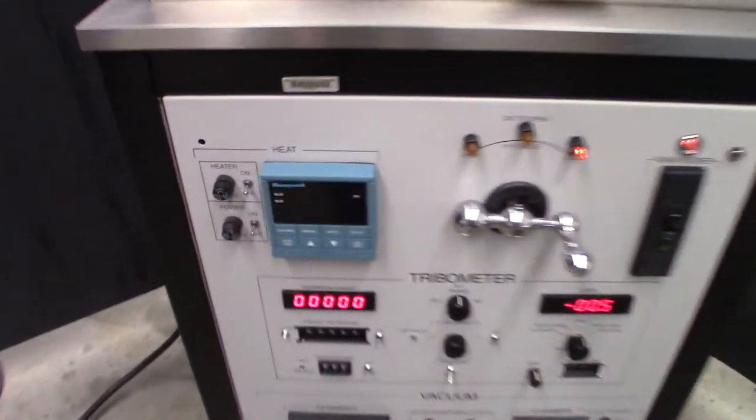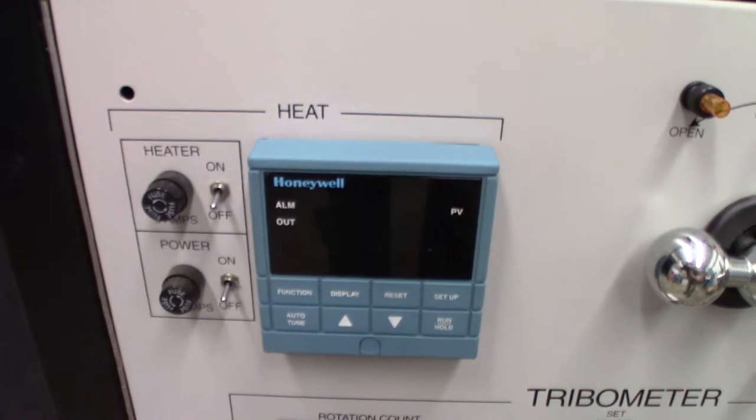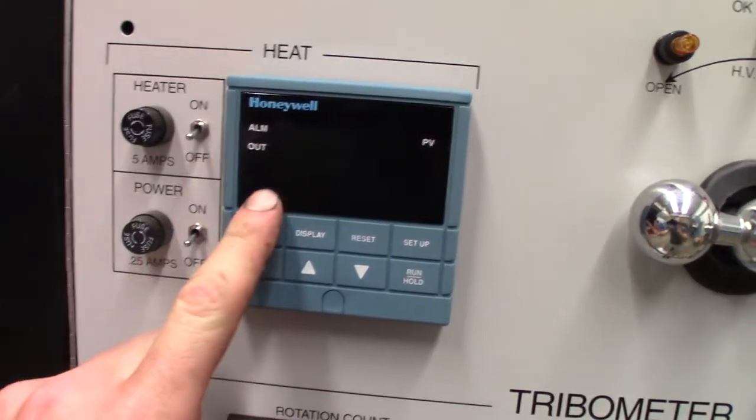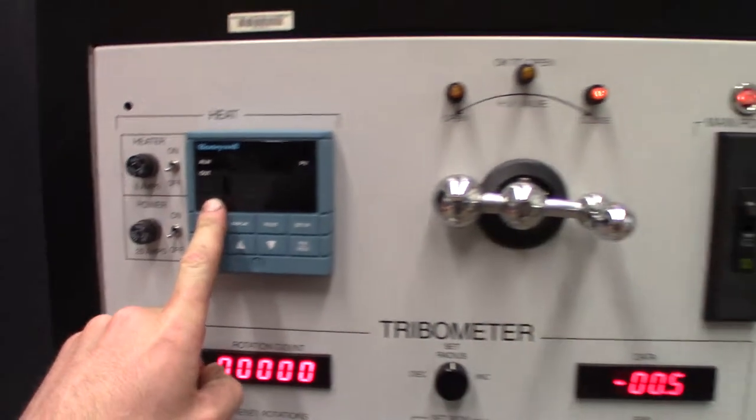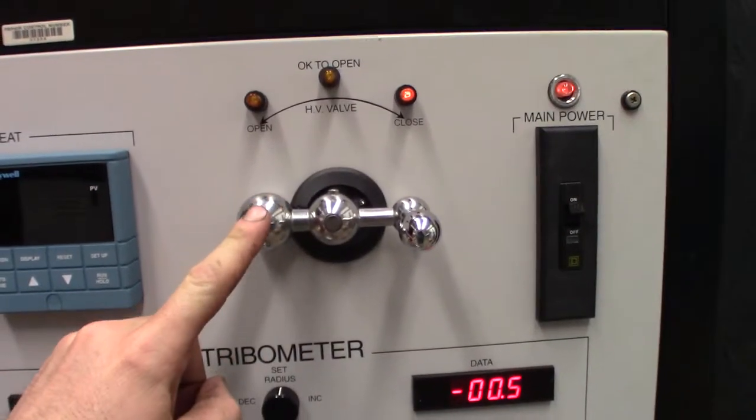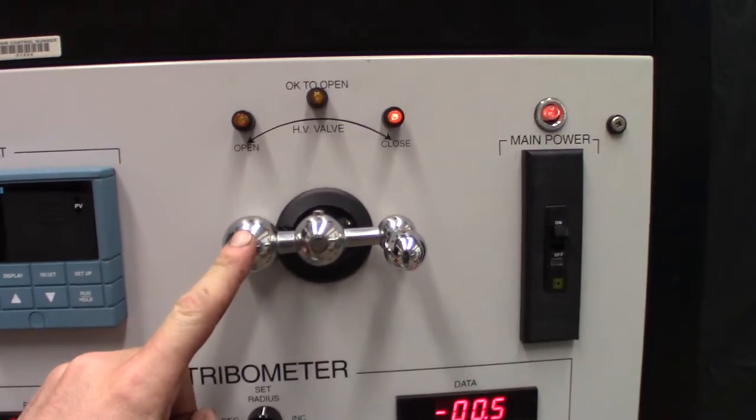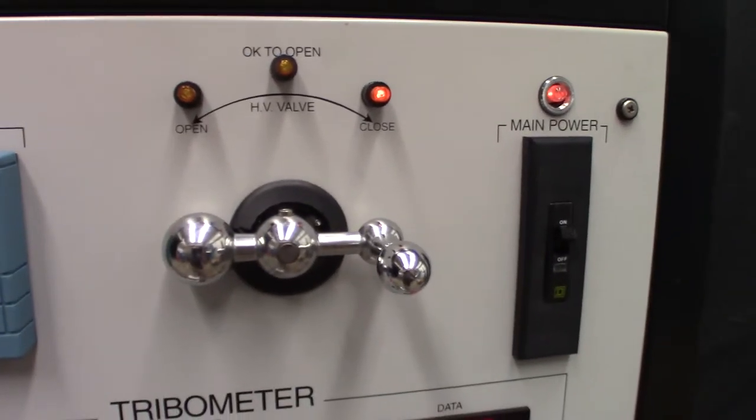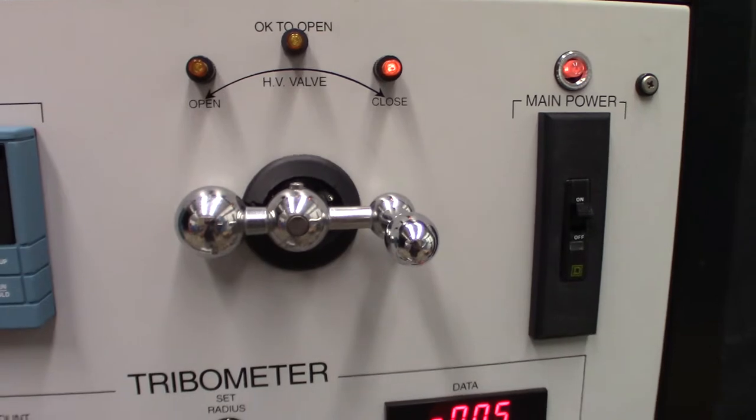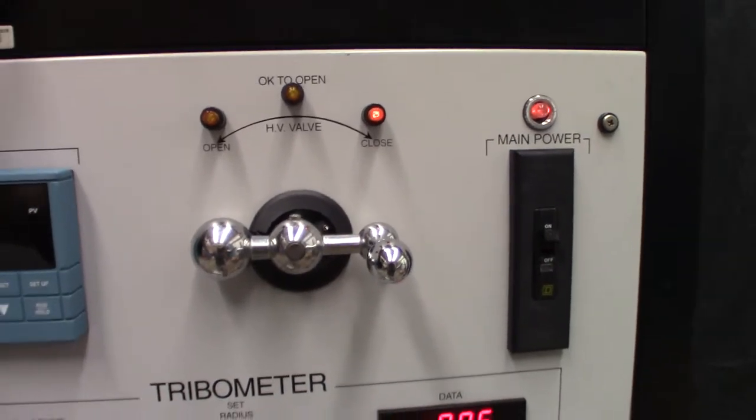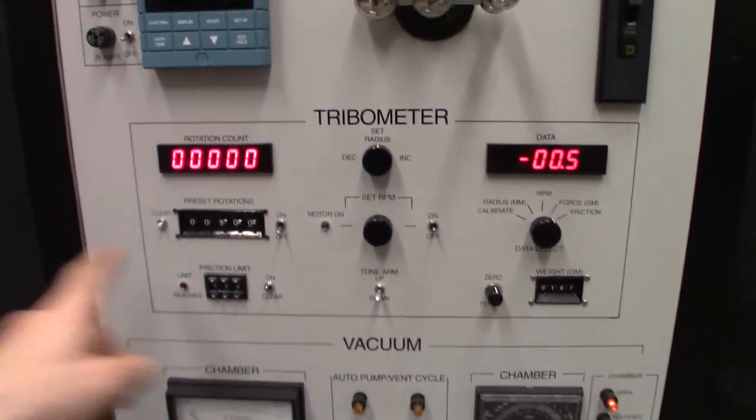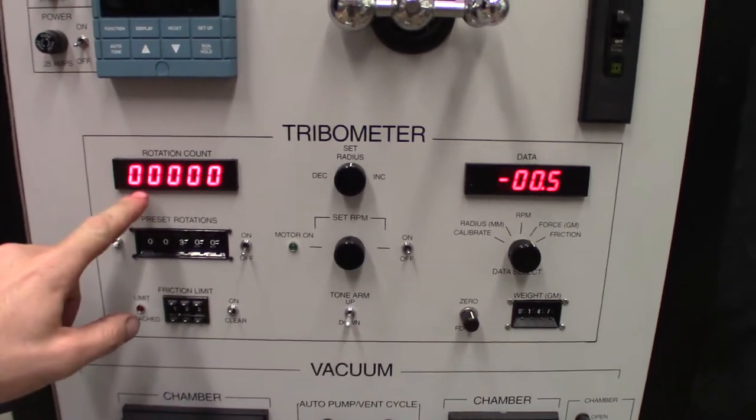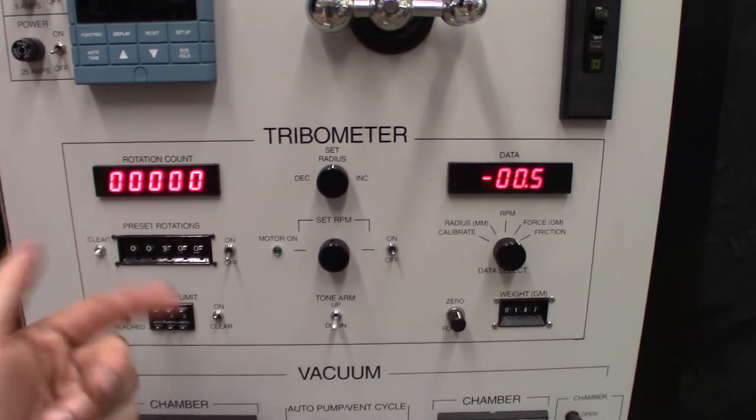This is pretty self-explanatory. The heat is controlled with this Honeywell temperature controller. Here is the main vacuum valve. This operates a big gate valve which will separate the vacuum pumps from the actual chamber. The center section here is the tribometer section.